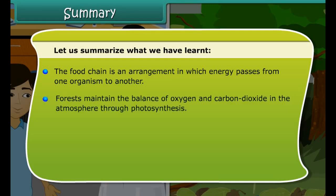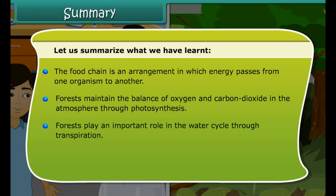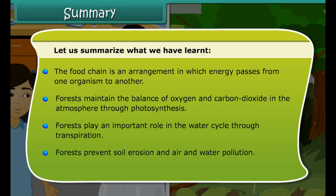Let us summarize what we have learned. Forests are vast stretches of land densely populated by trees, and are home to a wide variety of flora and fauna. The uppermost layer of a forest is known as the overstory; lower layers formed by shrubs, herbs, and mosses constitute the understory. Forests give us numerous products such as wood, fodder, medicinal plants, paper, bamboo, rubber, and glue. The food chain is an arrangement in which energy passes from one organism to another. Forests maintain the balance of oxygen and carbon dioxide through photosynthesis, play an important role in the water cycle through transpiration, and prevent soil erosion and air and water pollution.